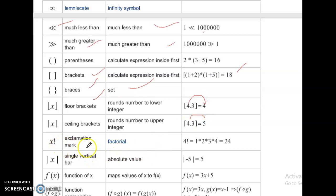X exclamation mark. Factorial. 4 factorial means 1 into 2 into 3 into 4 equal to 24.